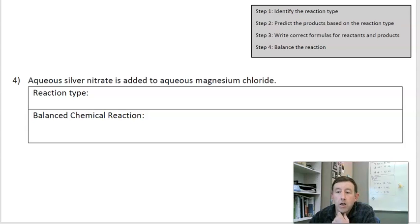Welcome back. Let's go blue this time. In this case, reaction number four, I have aqueous silver nitrate, so this is Ag+ and nitrate is NO3-, added to aqueous magnesium chloride, so Mg2+ and Cl-.